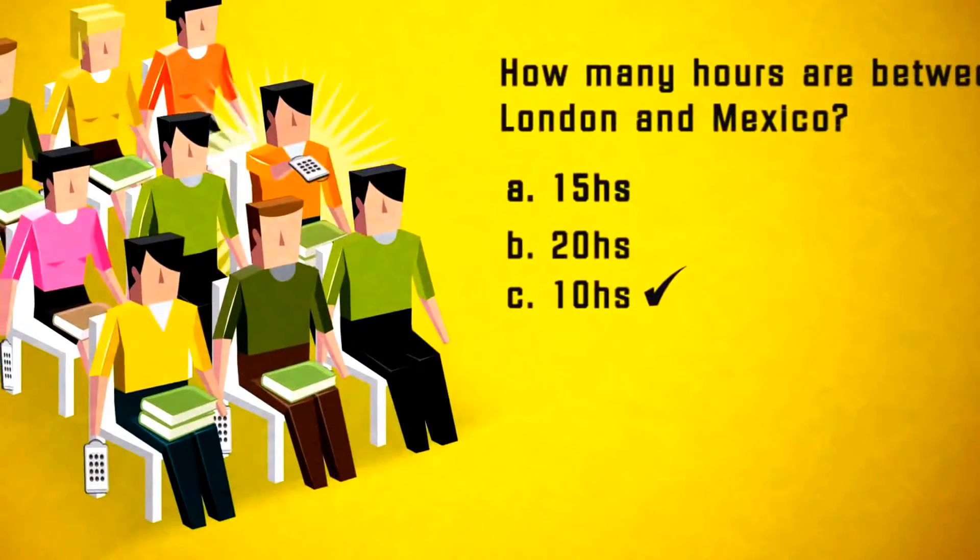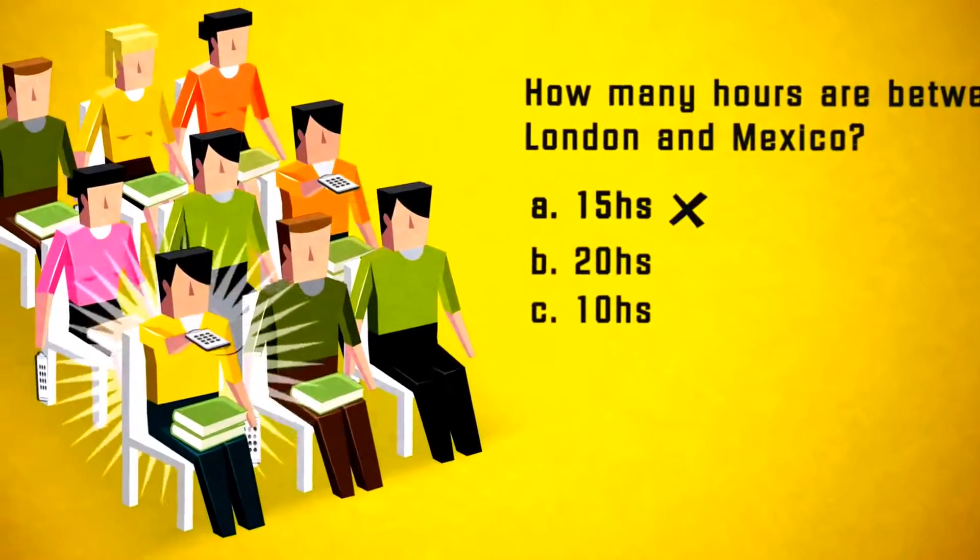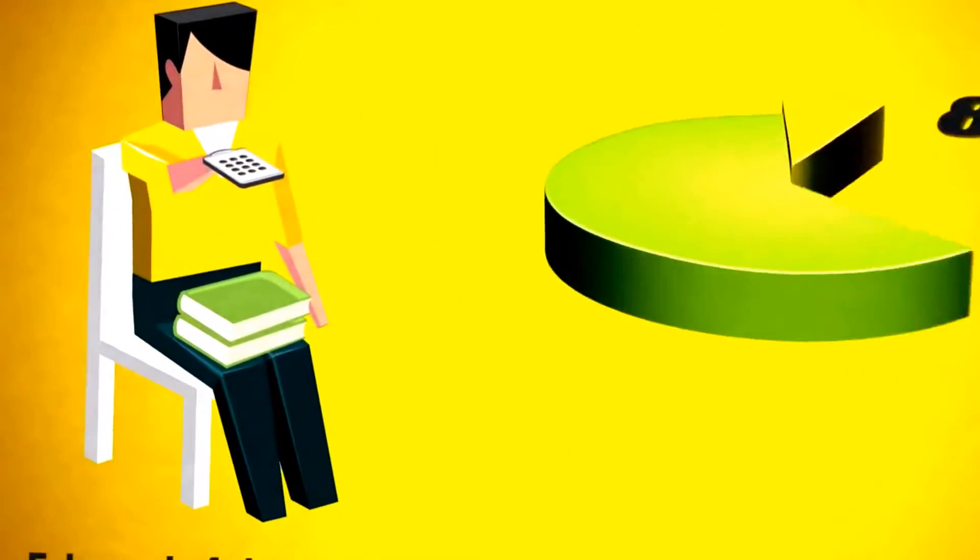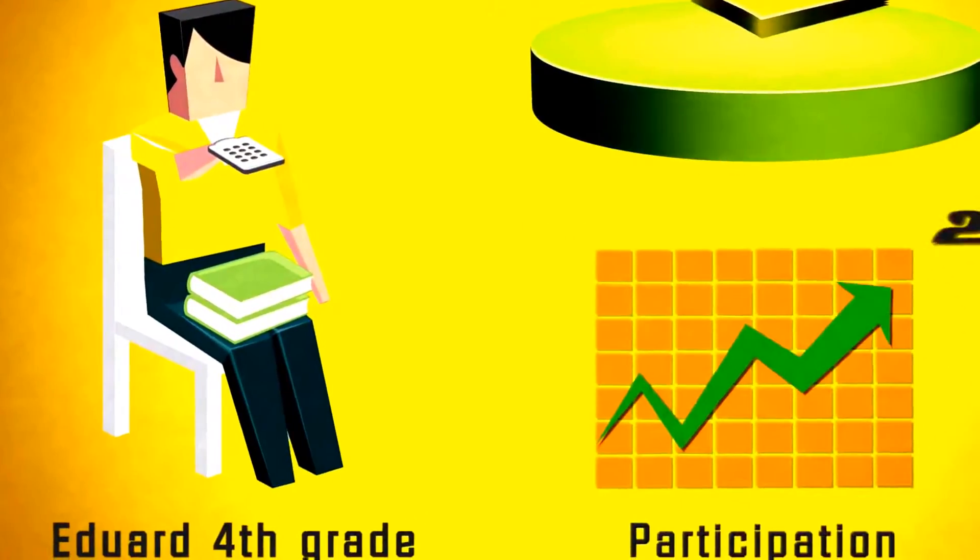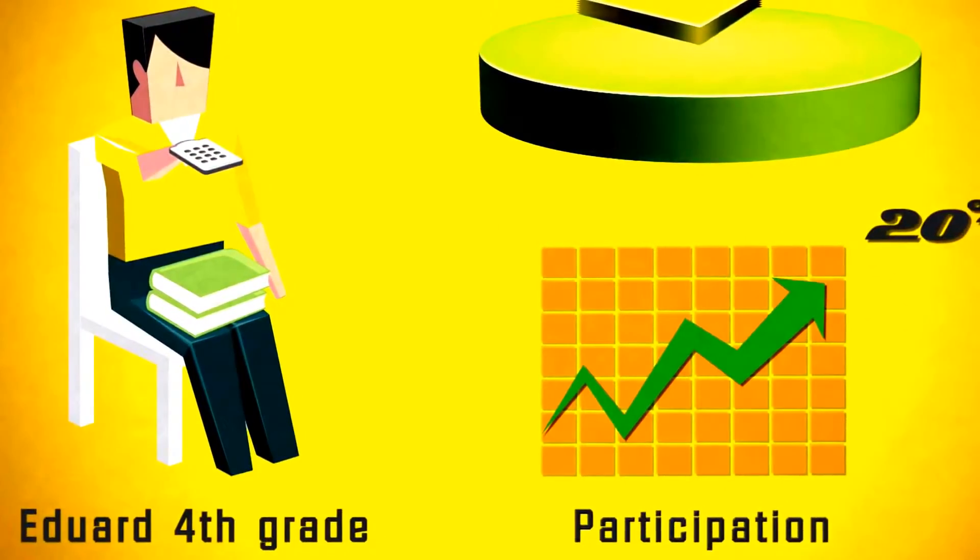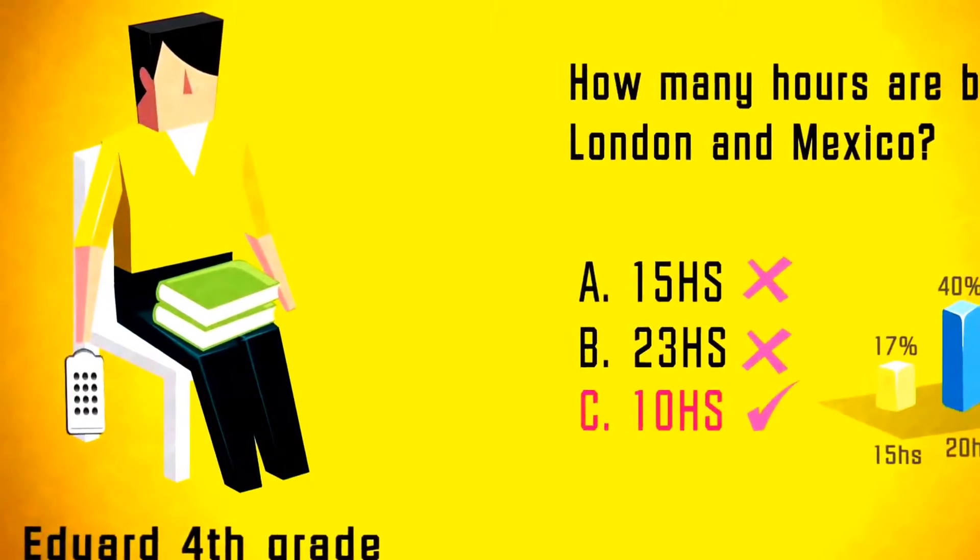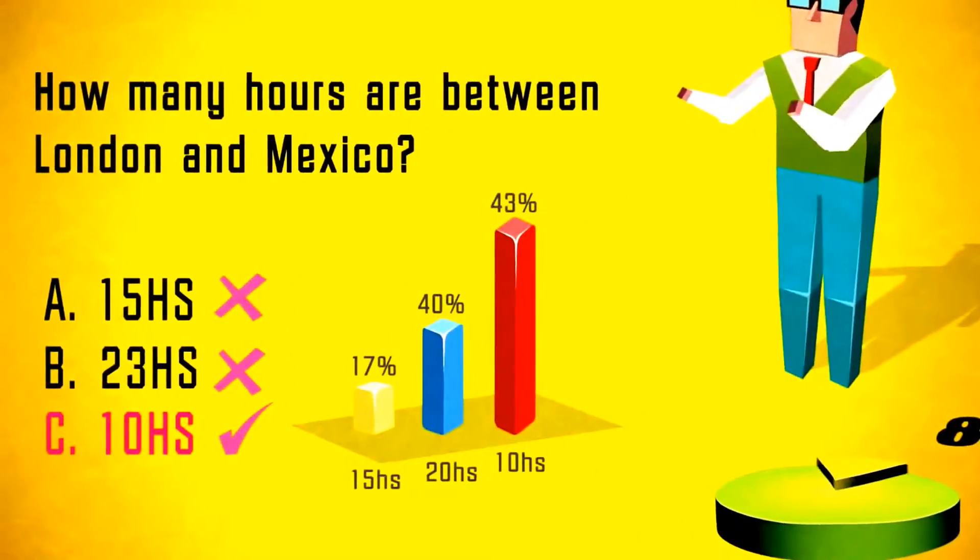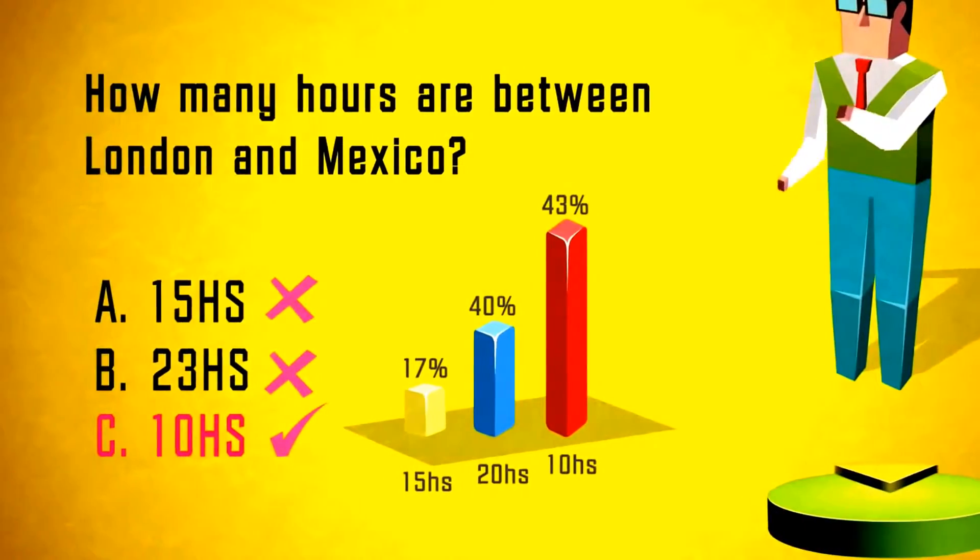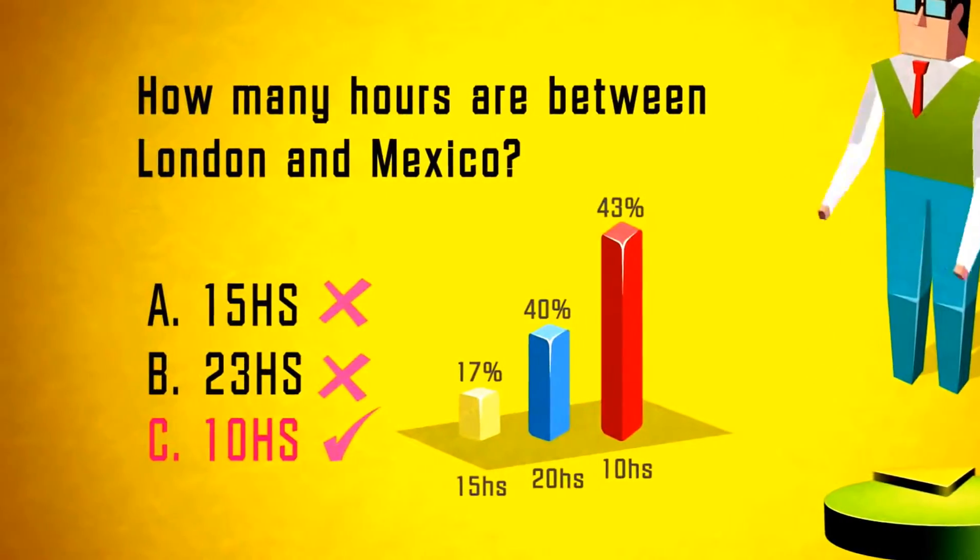Students are able to participate in class anonymously among their peers, but can be uniquely identified to monitor progress, perform assessments, and track participation. As students participate, they gain immediate feedback and instructors can assess comprehension instantly to facilitate better understanding and learning.